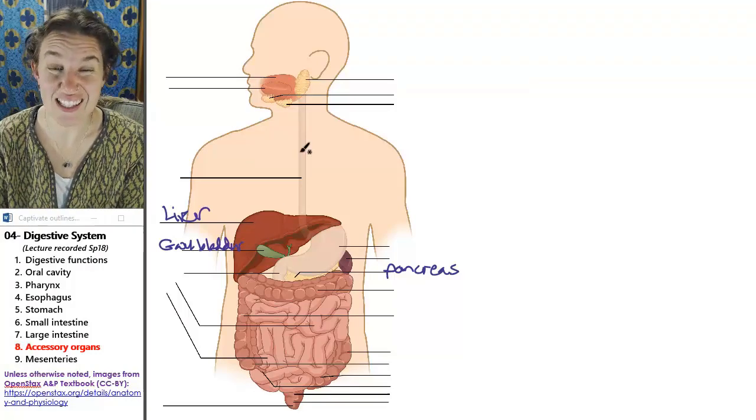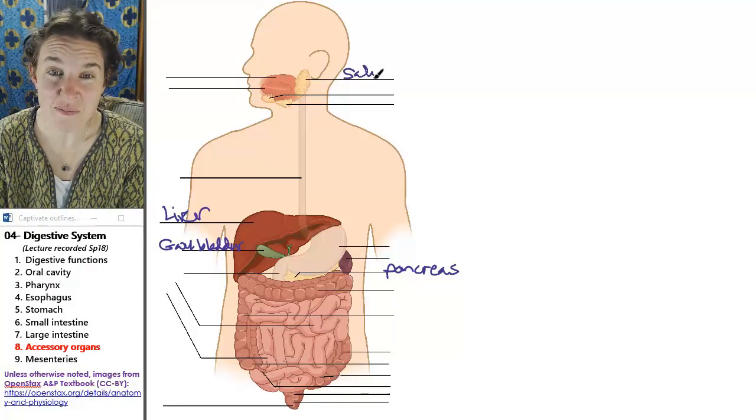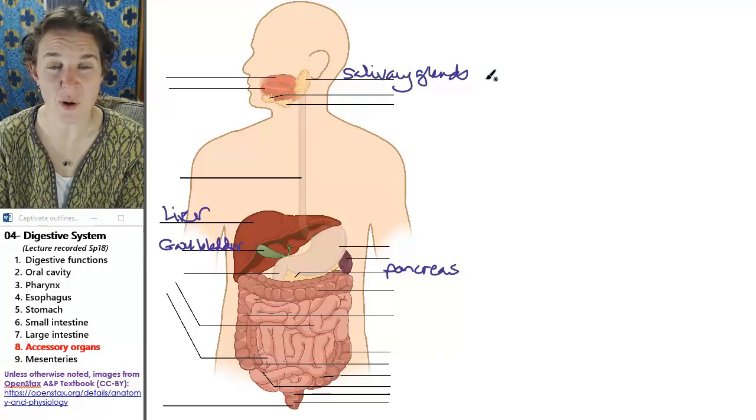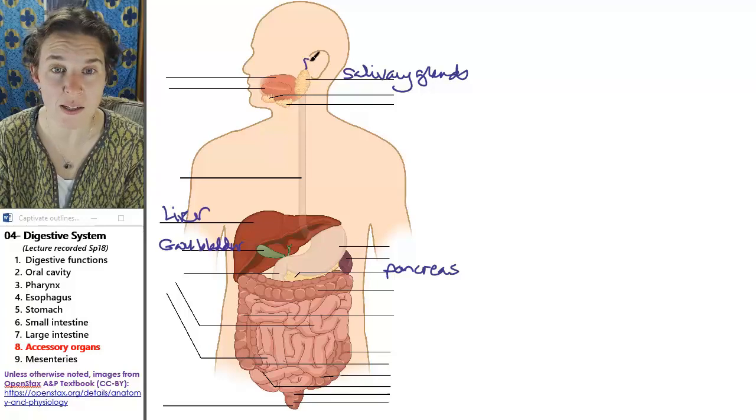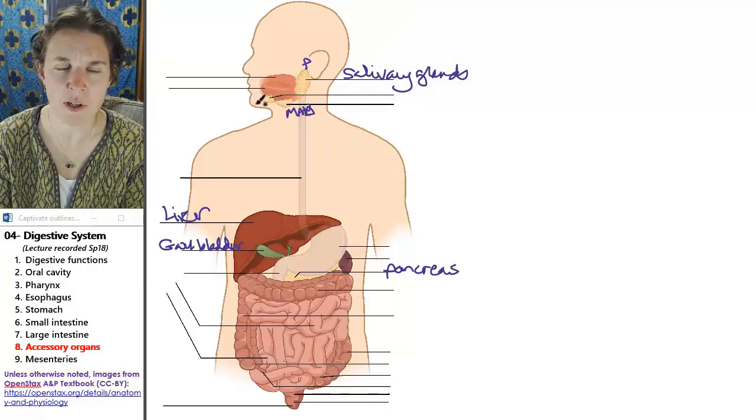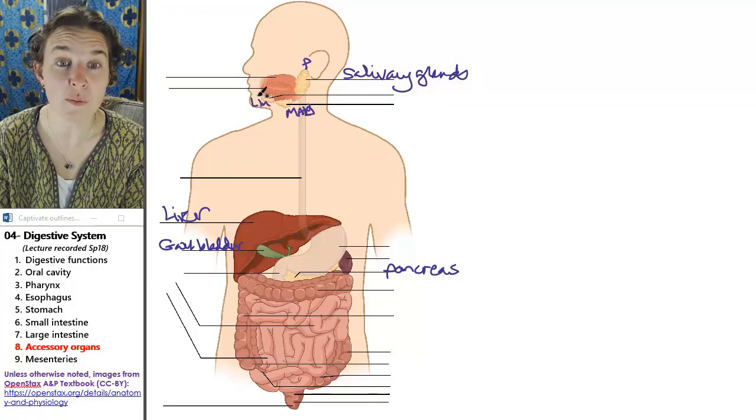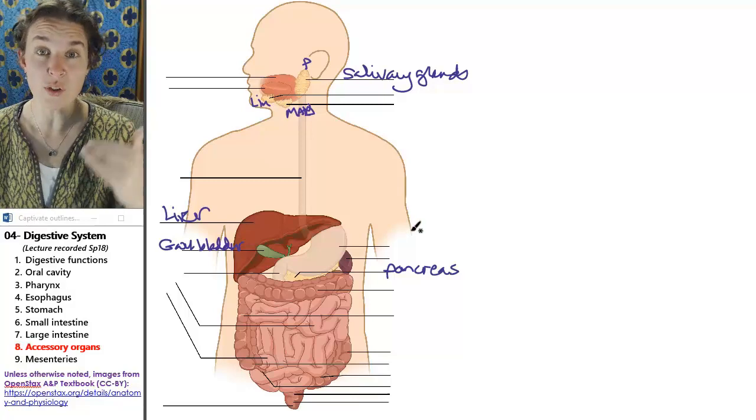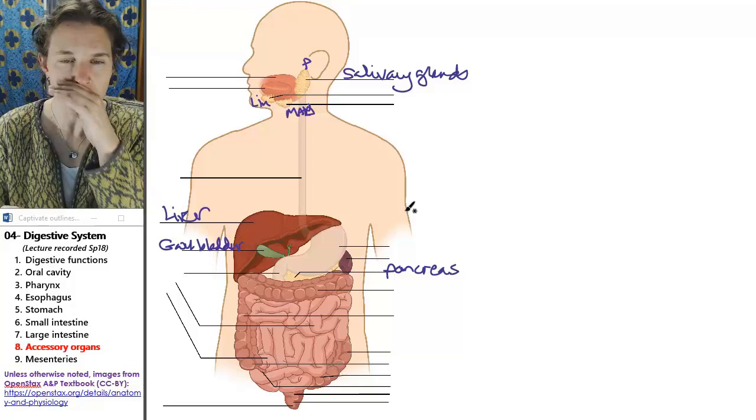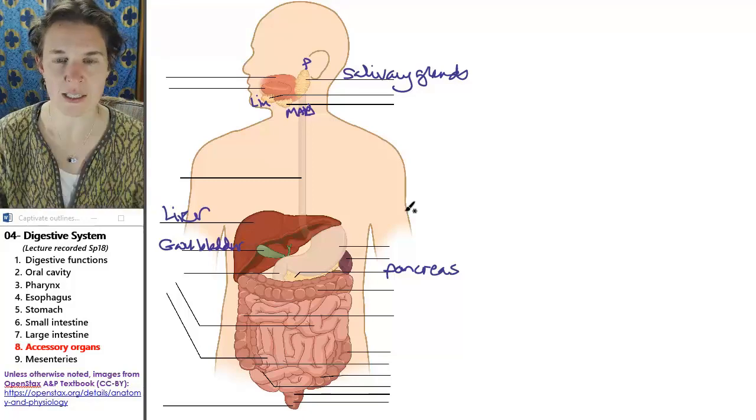The salivary glands are also accessory organs - parotid, submandibular, and sublingual. Those are also accessory organs, but it was easier to talk about them in the oral cavity section.